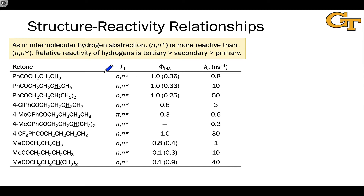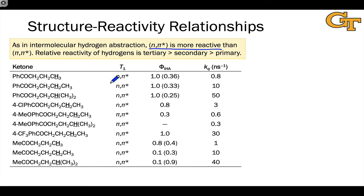First, let's look at structure-reactivity relationships within the photo-excited ketone. As we saw in the intermolecular case, the n-π* state is more reactive than the π-π* state. The basic reason is that the n-π* state has that unpaired electron on oxygen doing the business of hydrogen atom abstraction — more accurately, it's the half-filled electrophilic n orbital in the n-π* state that's responsible.